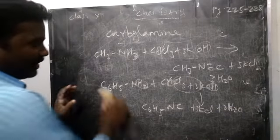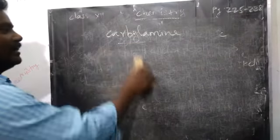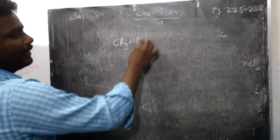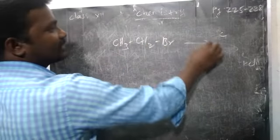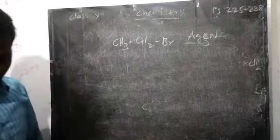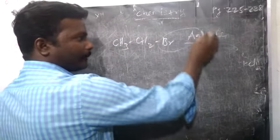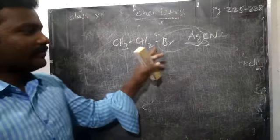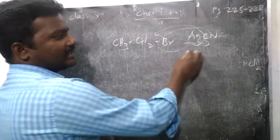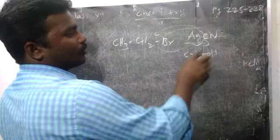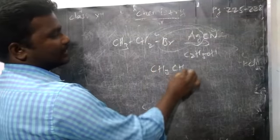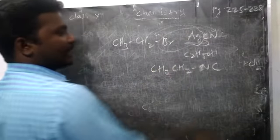Another preparation: by taking alkyl halide with silver cyanide (AgCN). Alkyl halide like ethyl bromide is treated with silver cyanide CN. So AgBr will go out, and CN you can add. But here we want to prepare isocyanide — because of this medium, nitrogen will attack the carbon. So CH3, CH2, NC — isocyanide will form.